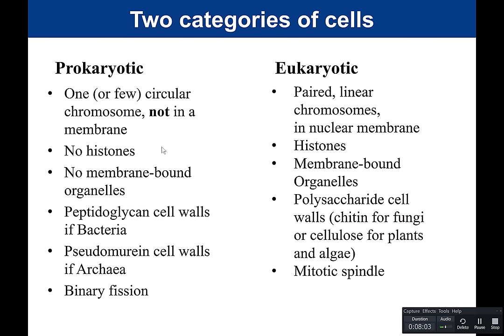Most bacteria have an average size of about one micrometer. Cocci (spheres) have a circumference of approximately one micron; rods like E. coli are about two micrometers long and one micrometer wide. For scale, a red blood cell is approximately 7.5 micrometers in size.